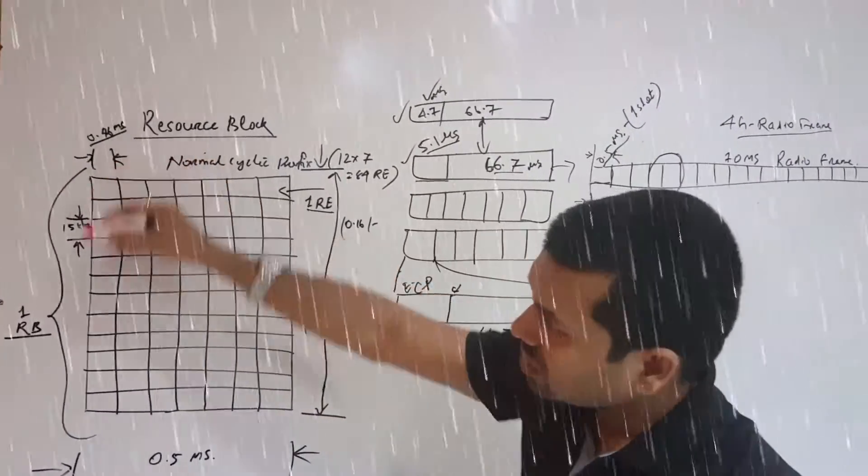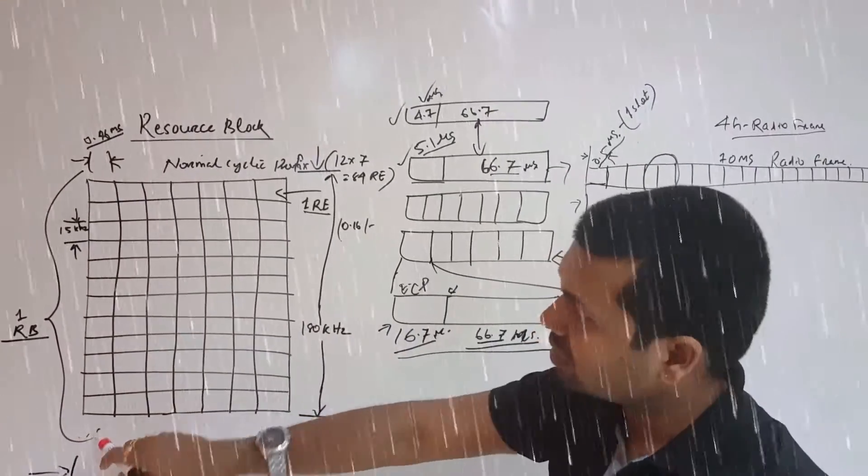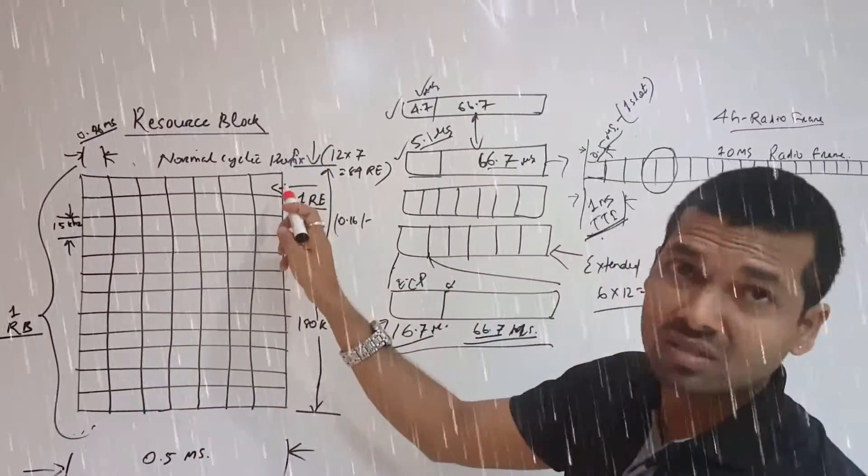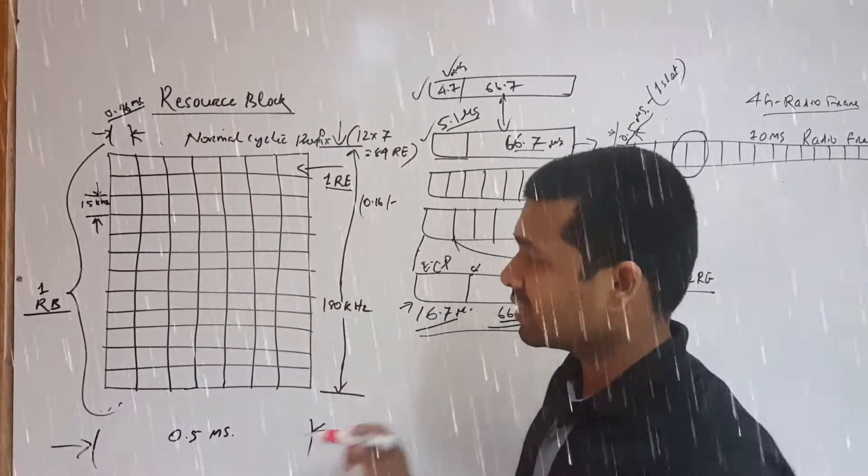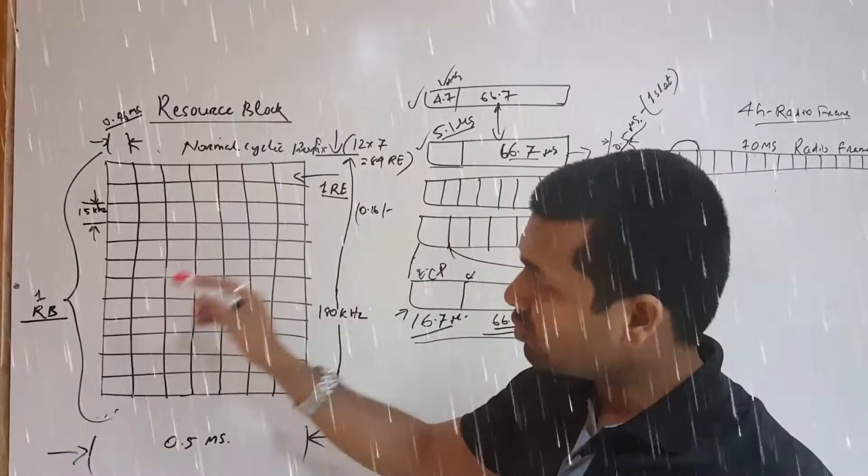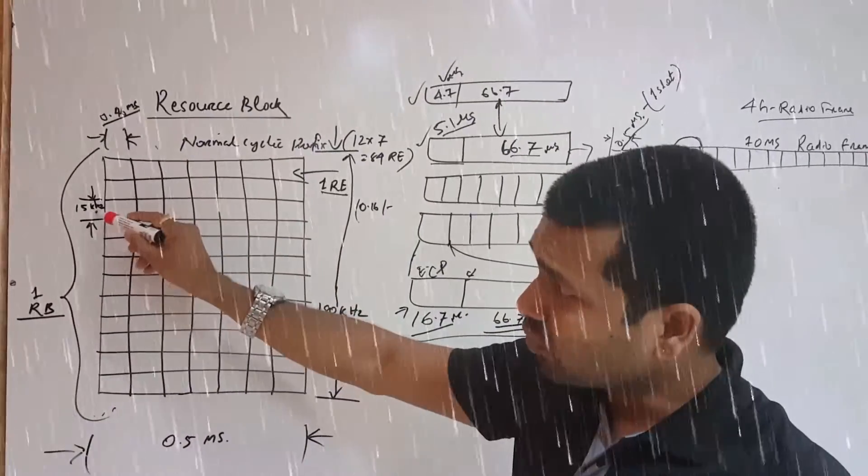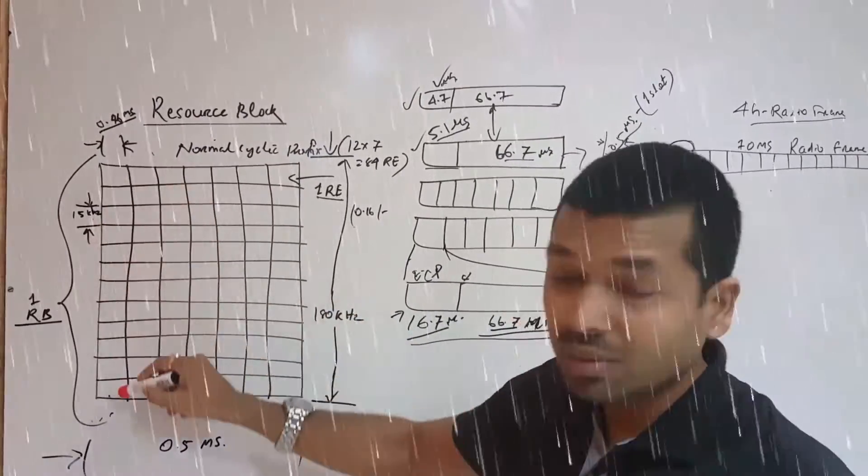Then we are having this resource block, that is 0.5 ms. That means in one TTI we are having two resource blocks consecutively. And in every resource block we are having 12, 15 kHz subcarriers.